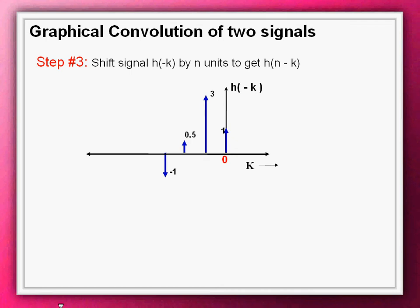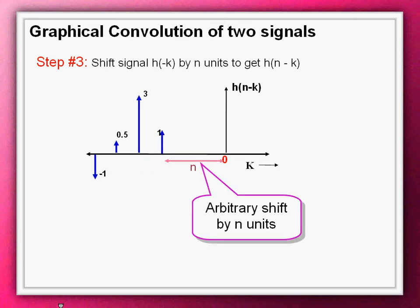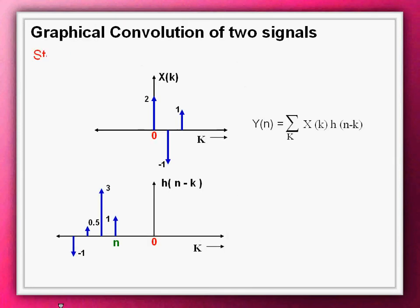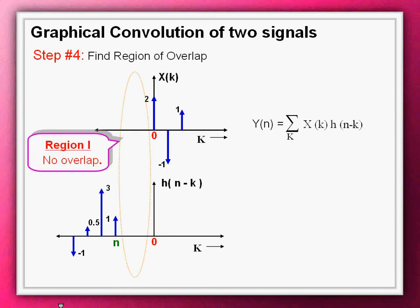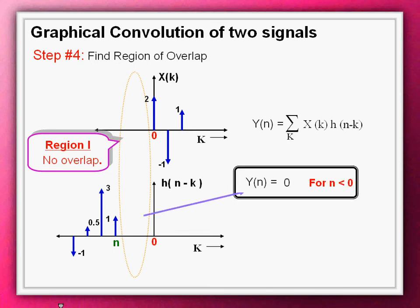Step three, as per the convolution equation, we give an arbitrary shift to the flipped signal. So let's shift h[n minus k] and obtain a signal h[n minus k] with an arbitrary shift of n units. Step four is to find the regions of overlap between the two signals. As seen, there is no overlap between the two signals, and hence the convolved result turns out to be zero in the region n less than zero.